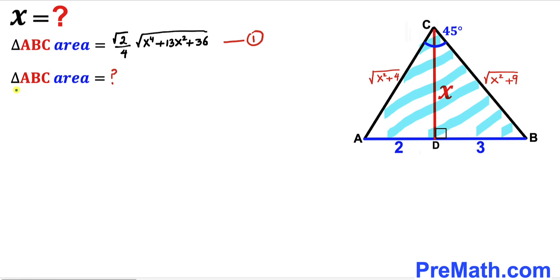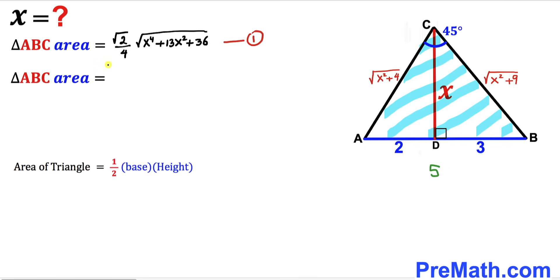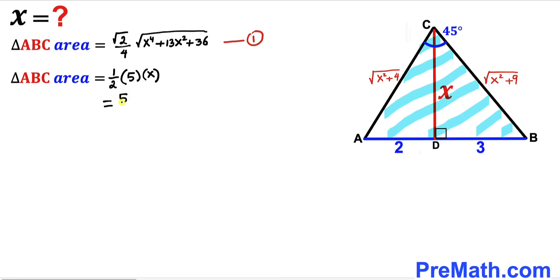Now let's calculate the area of triangle ABC in a different way using Area = ½ · base · height. The base of triangle ABC is AD + DB = 2 + 3 = 5, and the height is x. So the area equals ½ · 5 · x = 5x/2. I'll label this equation number 2.